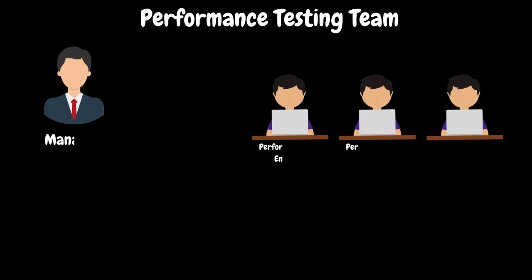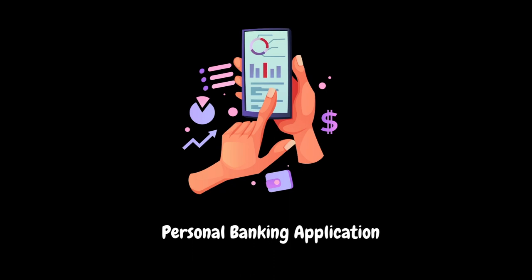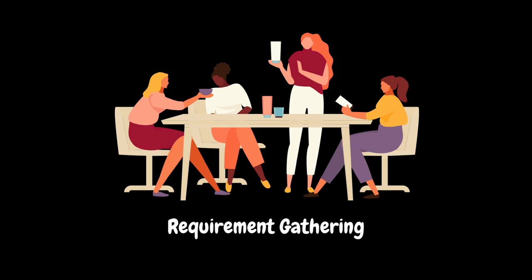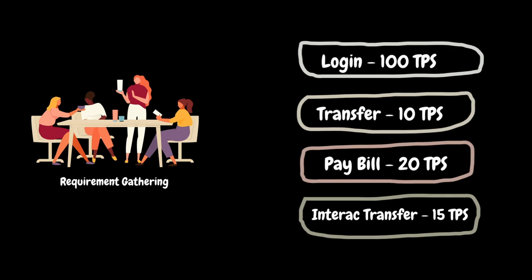To understand these concepts clearly, let's take a real-time scenario. Let's assume that within the performance testing team, we have one manager, one lead, and four performance test engineers who are responsible for conducting performance testing for all their client applications. They have been engaged to certify the performance of their client's personal banking application. During requirements gathering, the team understands the critical functionalities along with their throughput requirements. Those functionalities are login with 100 TPS, transfer funds between accounts with 10 TPS, paying bill with 20 TPS, and interact transfer with 15 TPS. Here, TPS means transactions per second. The client would like to understand their application performance with these volumes.